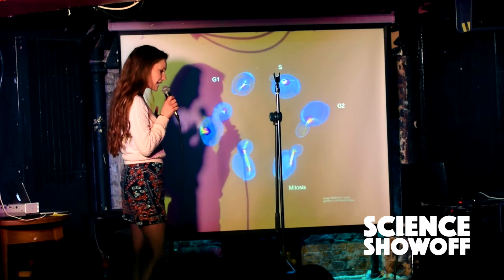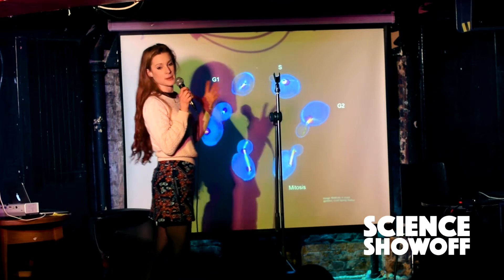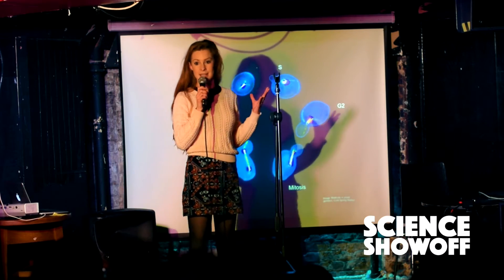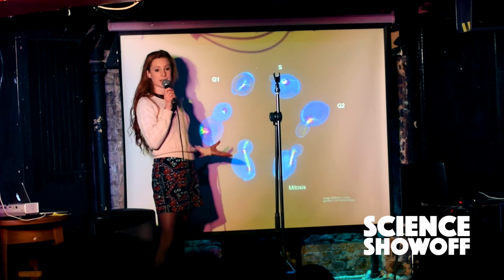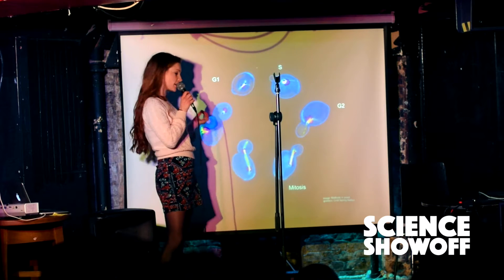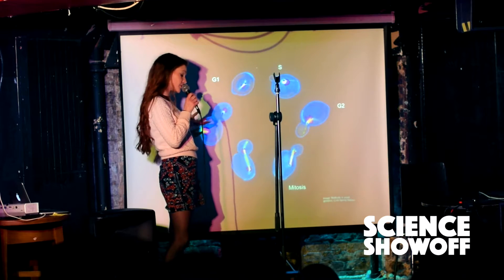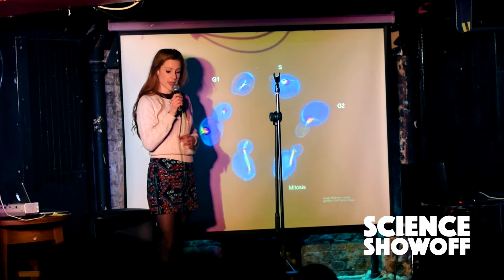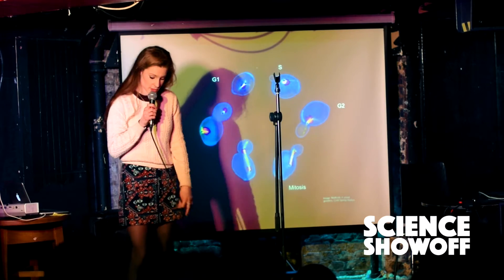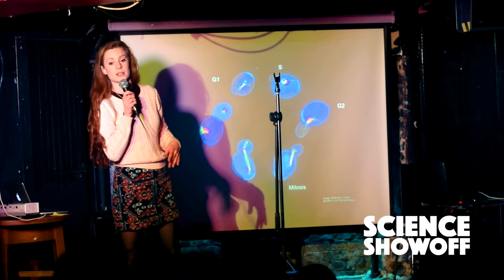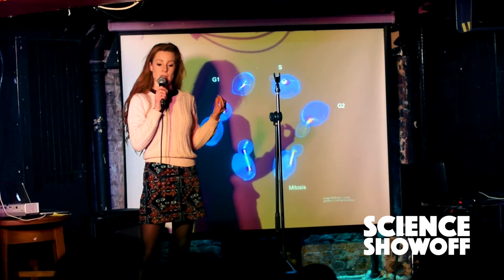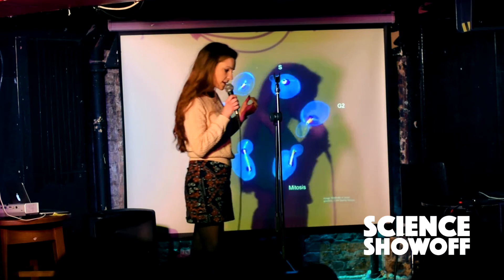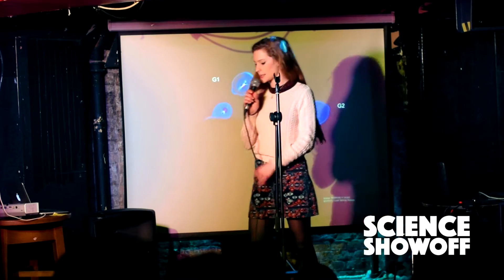So if a cell gets its knickers in a bit of a twist, let's say during S phase or during mitosis when it's segregating its chromosomes, then the cell has to sort itself out before it can move on to the next stage. So let's go back to this analogy of getting your knickers in a twist.